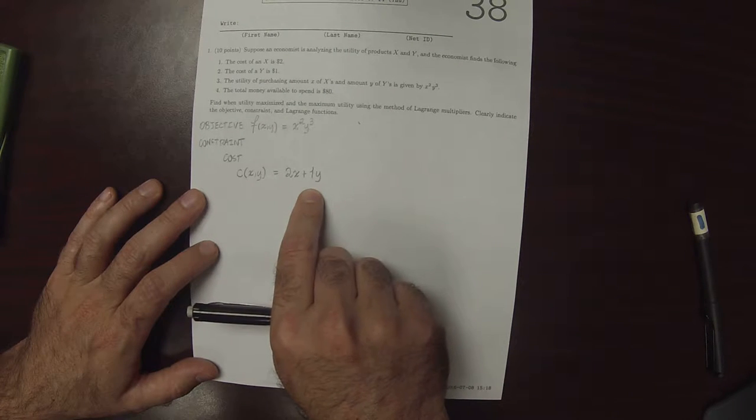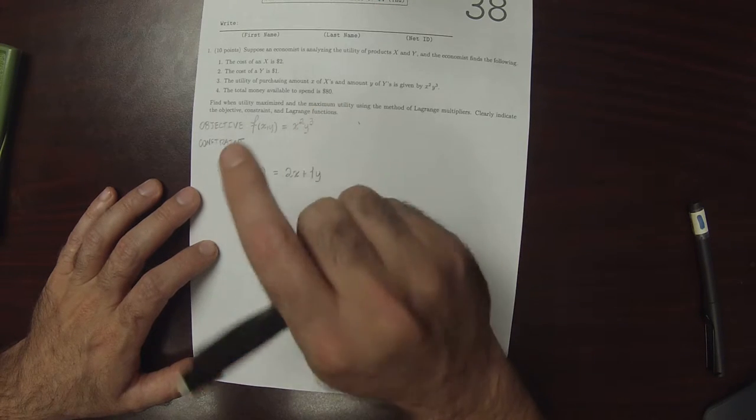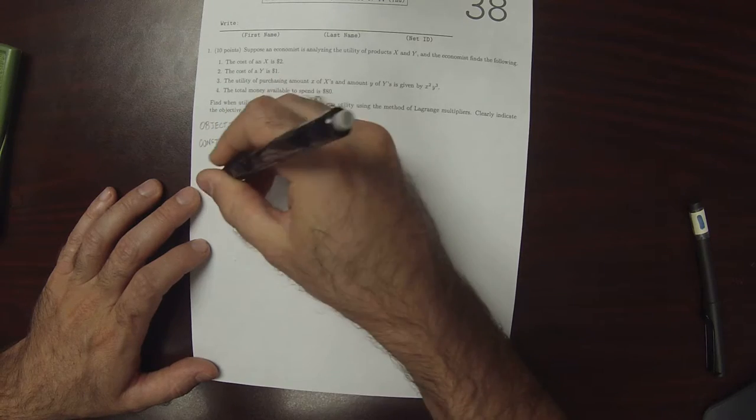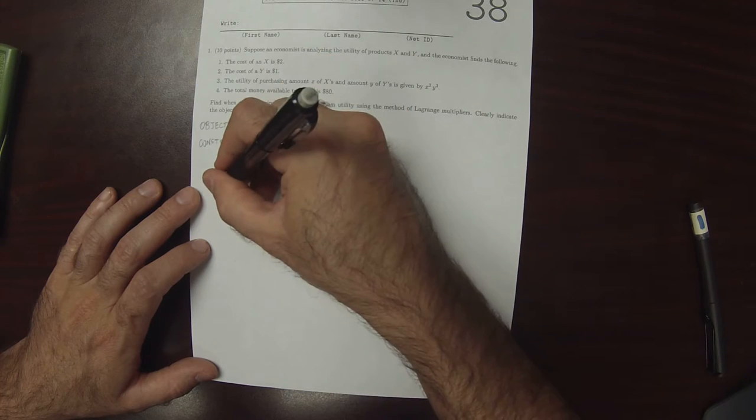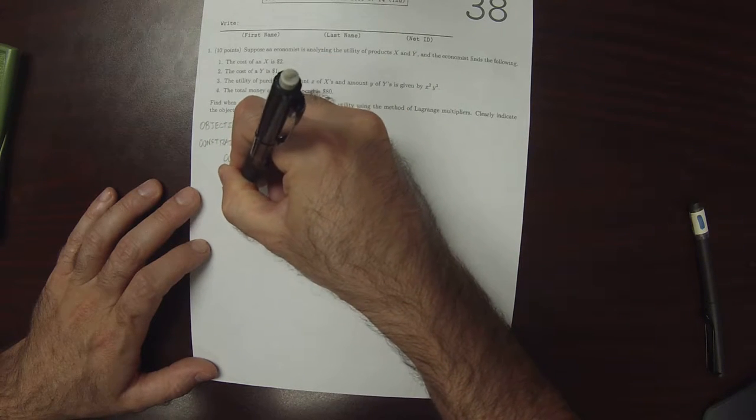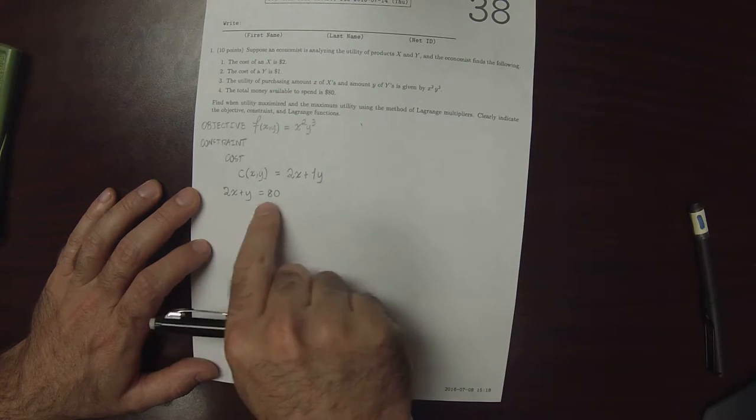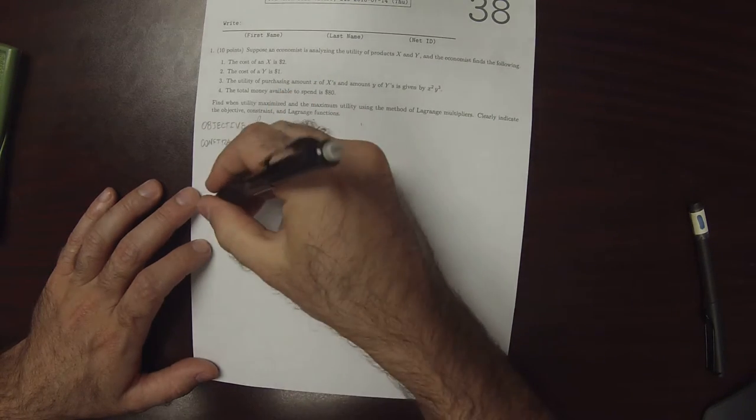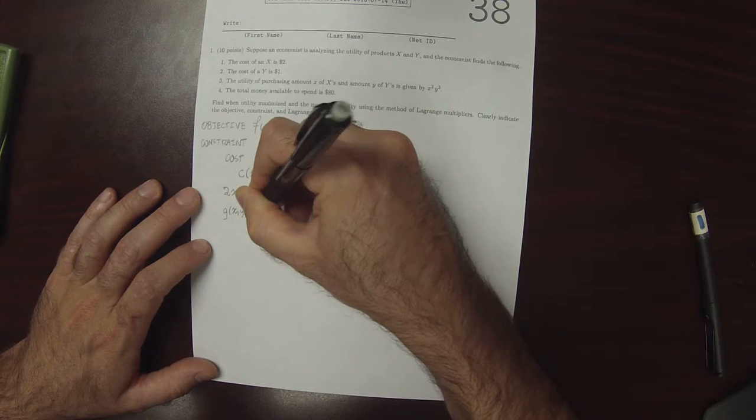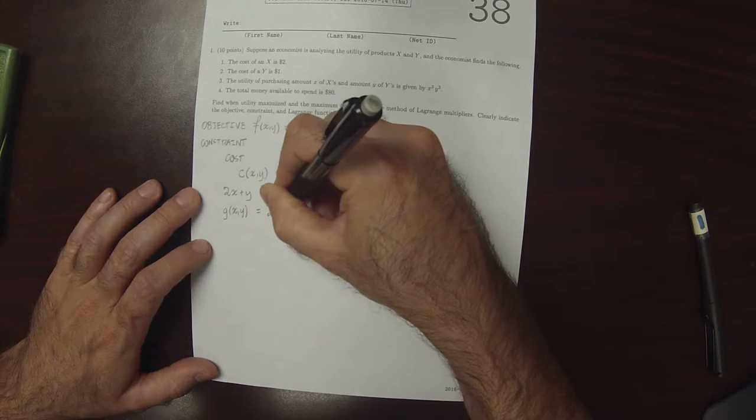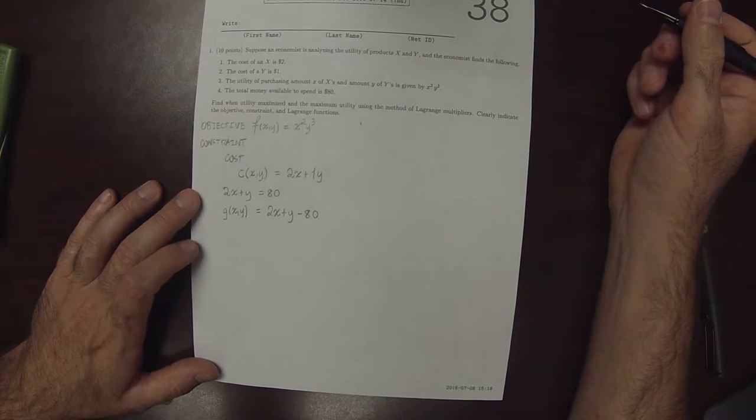And the constraint is that the total money available is $80. So the constraint equation is going to be 2x plus y equals 80, because that's the total cost we're allowed. The constraint function can be written as g of x and y is 2x plus y minus 80, to put it in the correct form.